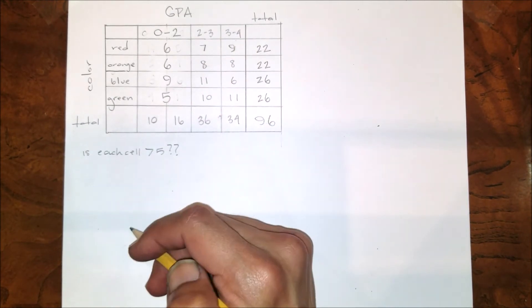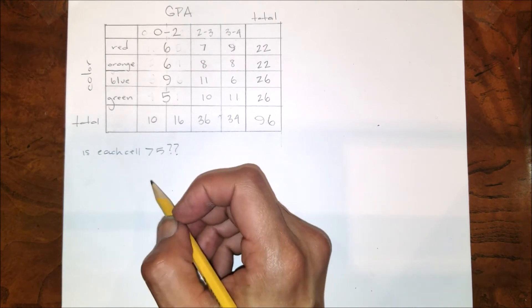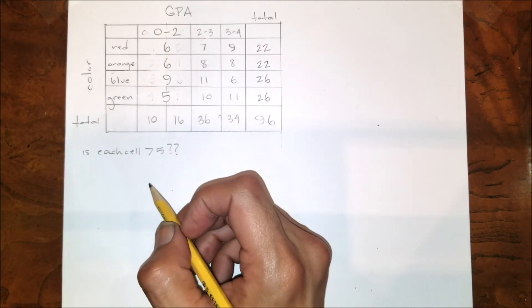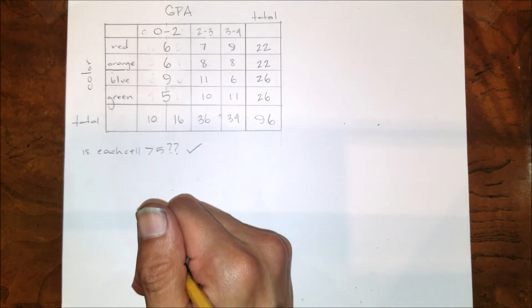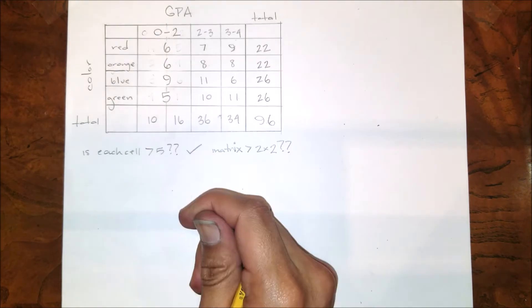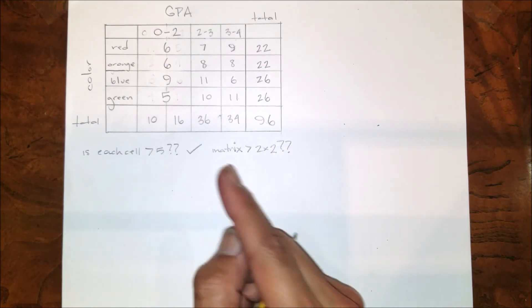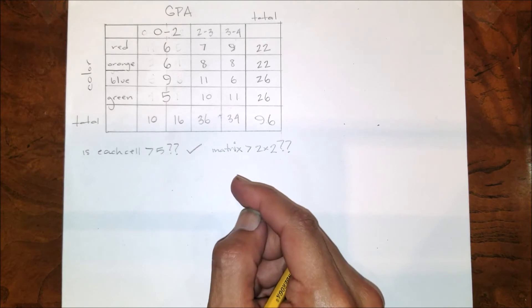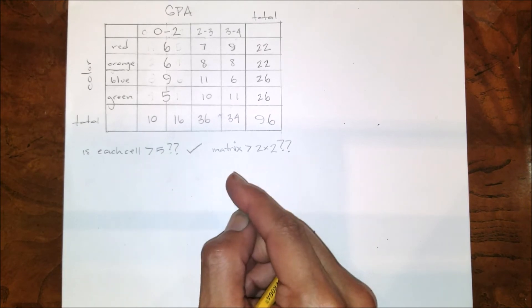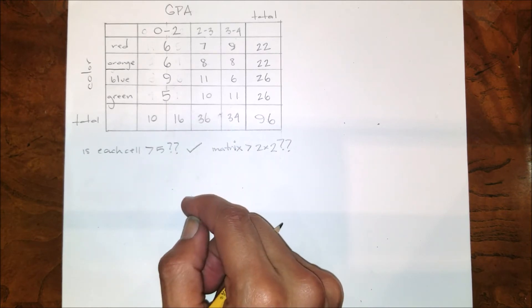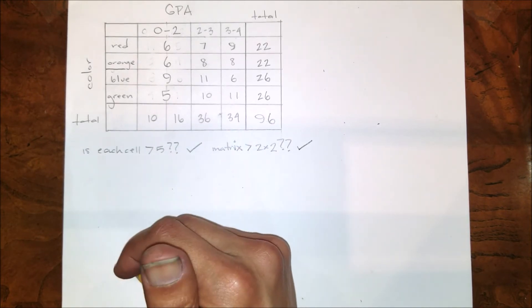So now is each cell greater than or equal to five? Check. One other requirement: is your matrix bigger than two by two? For the requirements of this paper, your matrix has to be bigger than two by two. So is my matrix bigger than two by two? Yeah, all right.